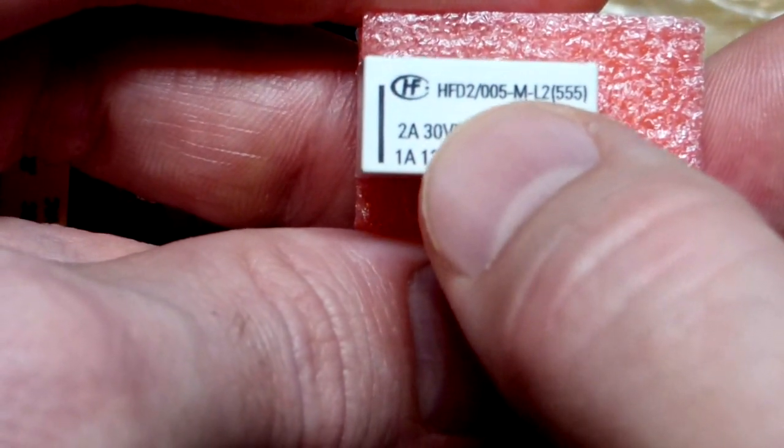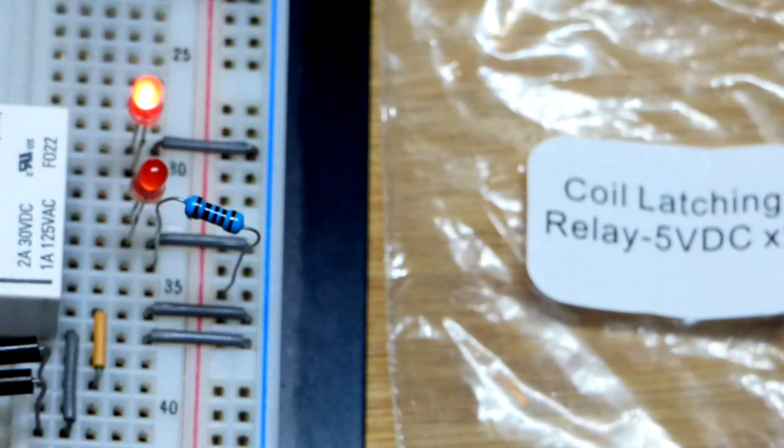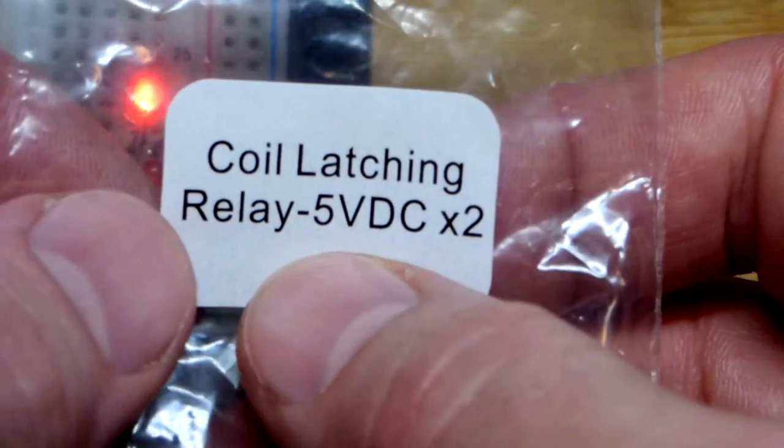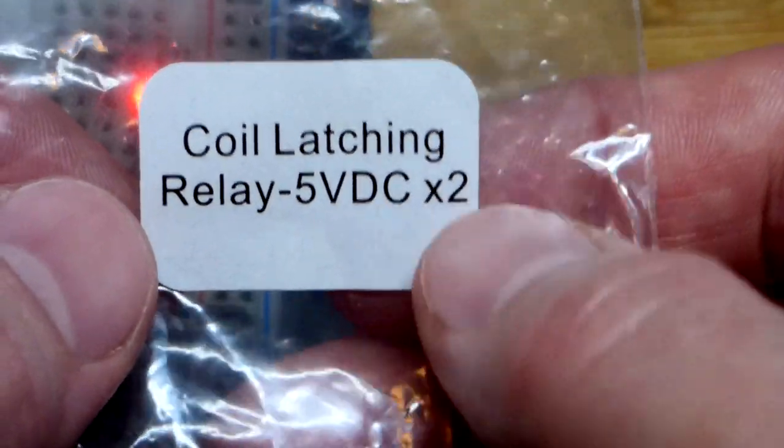And again there's the part number. I think that 005 indicates that it's a 5 volt relay. We also have the baggie that it came in and it mentions right there that it is a 5 volt relay.